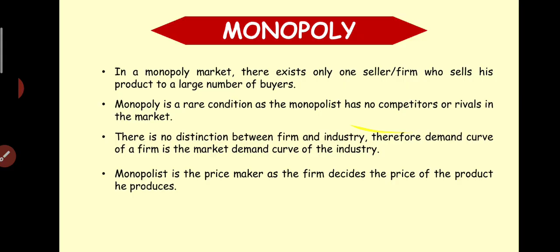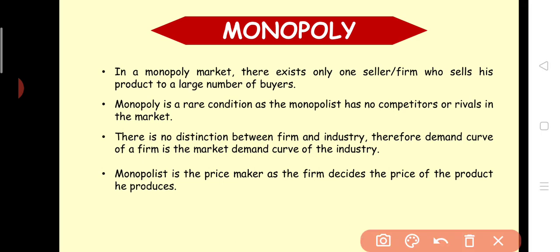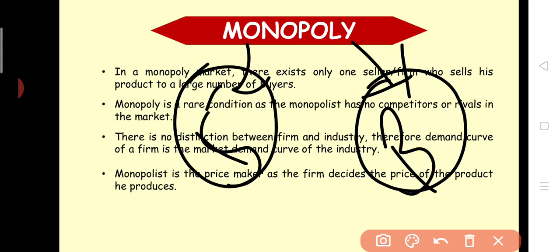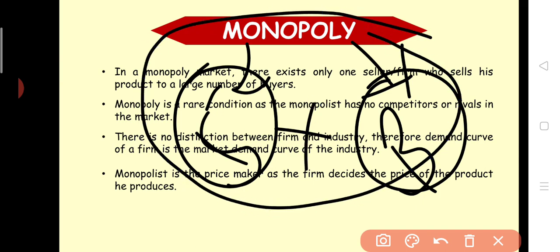So what do we mean by Monopoly? We have to define the word. Mono means single — that is, sellers. Poly means many — that is, buyers. So one single seller plus many buyers in a market makes the Monopoly structure.